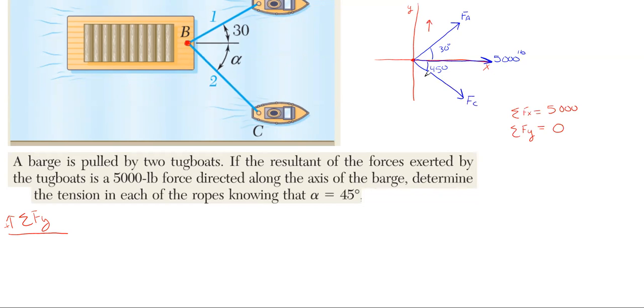The component for F_C in the y direction will be going downwards because F_A is up and to the right, so its component will be upward. F_C is going down and to the right, so its component in the y direction will be downward.